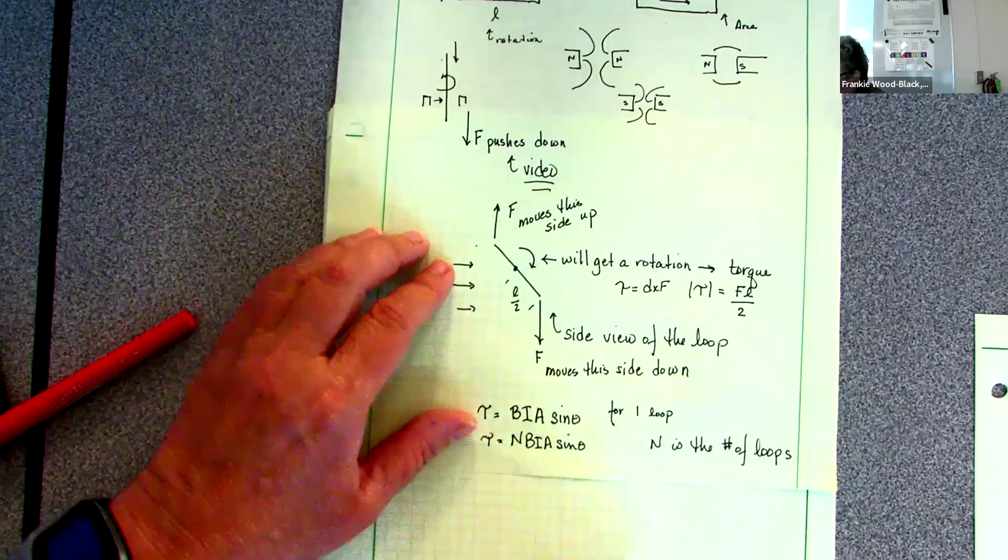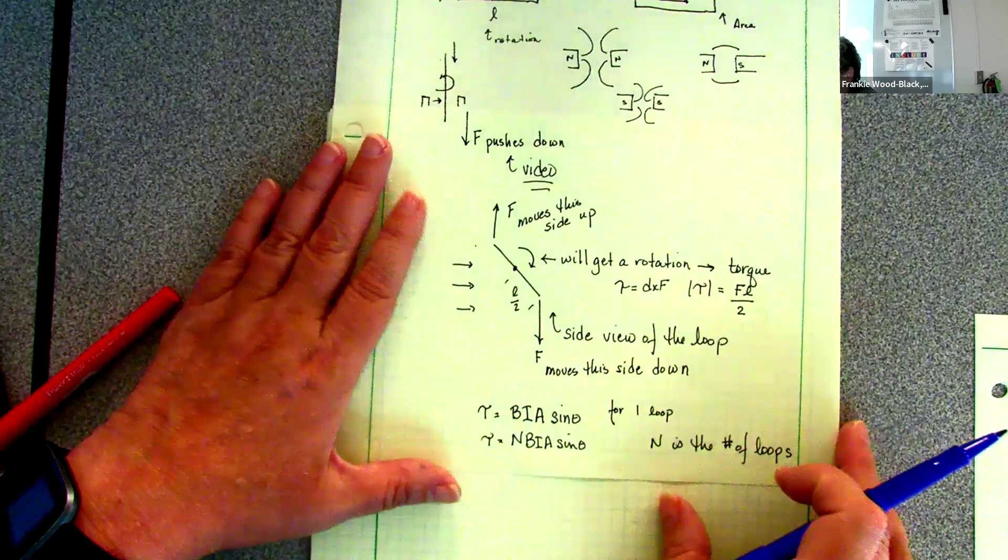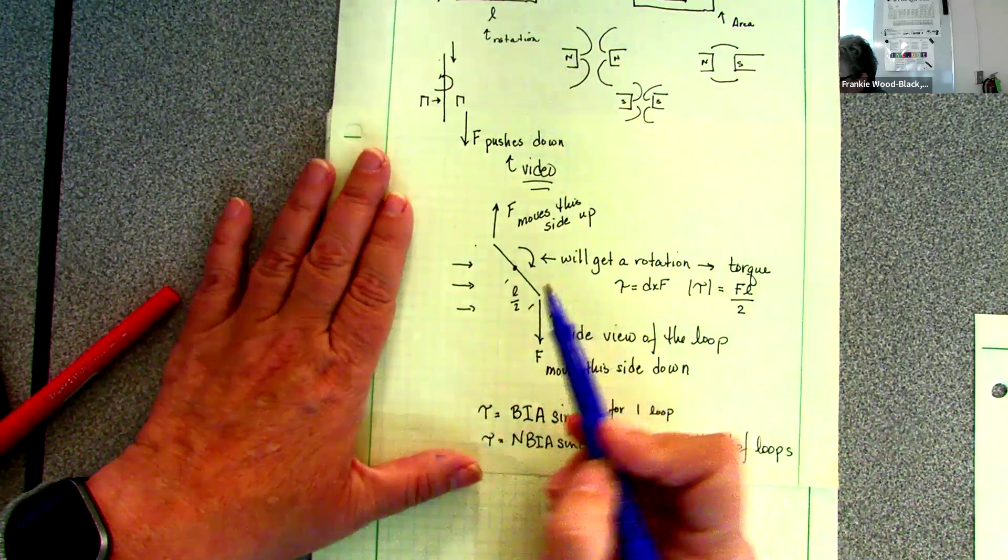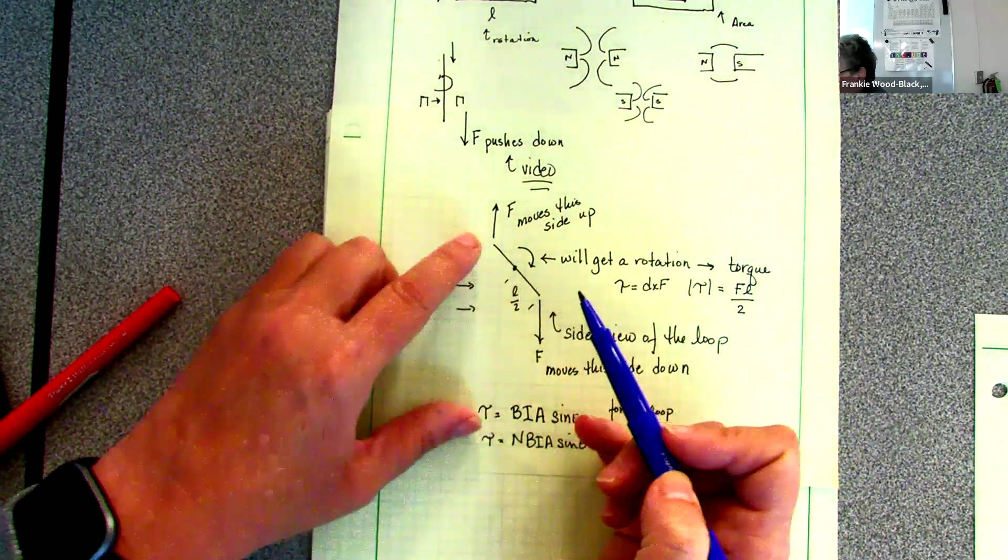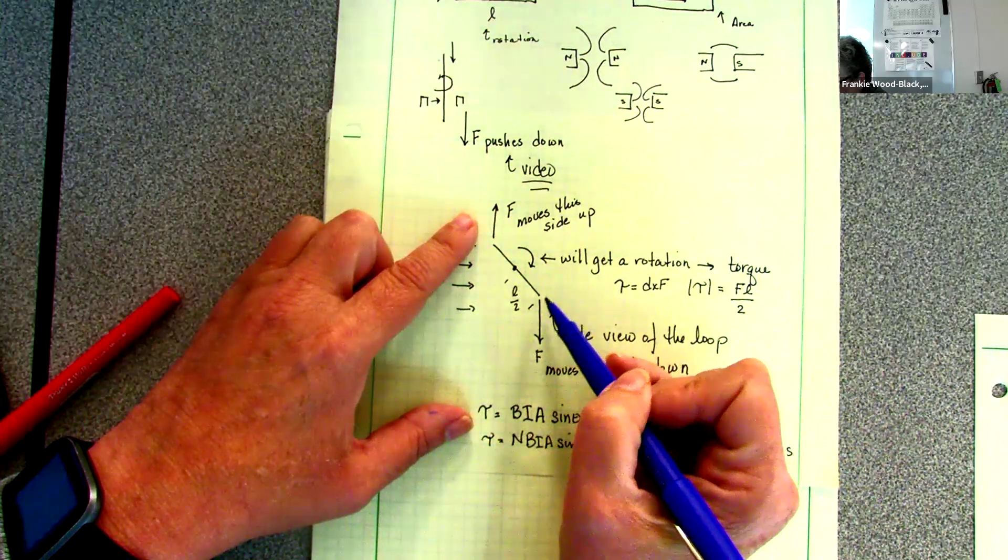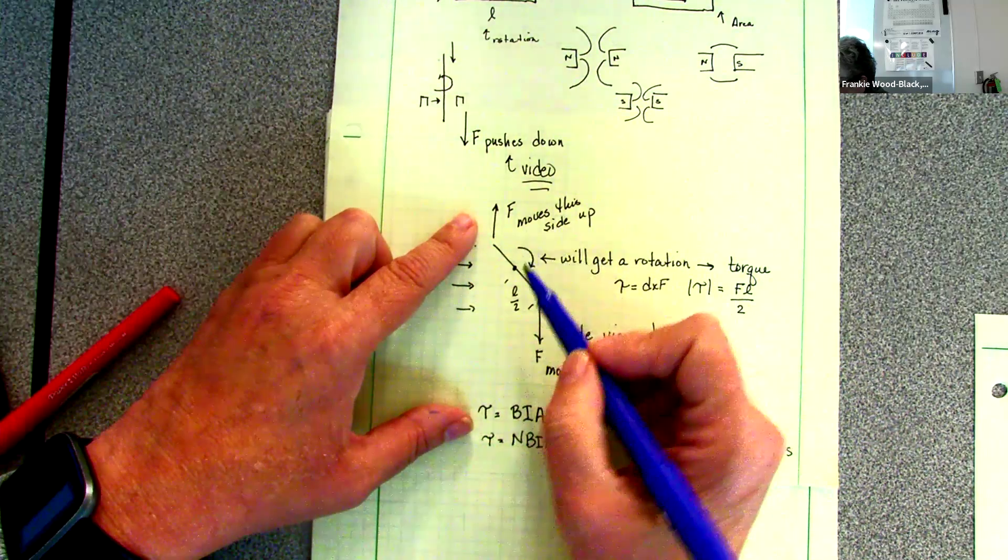Drawing it as if I'm looking from the top, the force of one side is going to push it up that way, the force of the other side is going to push it this way, so I'm going to get my rotation around it.